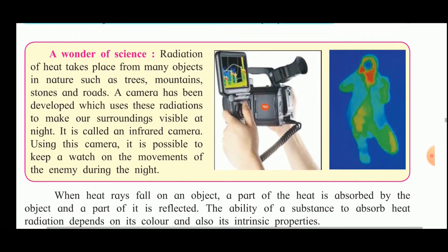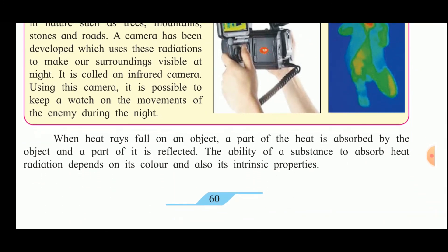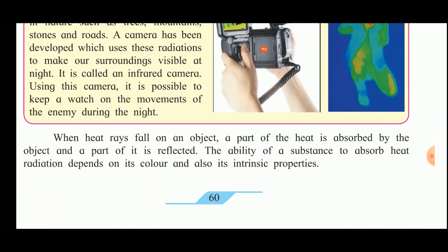Radiation of heat takes place from many objects in nature such as trees, mountains, stones, and roads. A camera has been developed that uses these radiations to make surroundings visible at night — this is called an infrared camera. Using this camera it is possible to monitor the movement of the enemy during night. When heat rays fall on an object, part of the heat is absorbed and part is reflected. The ability of a substance to absorb heat radiation depends on its color and its intrinsic properties.